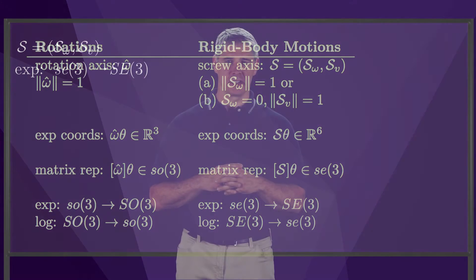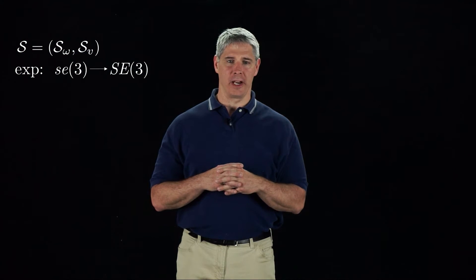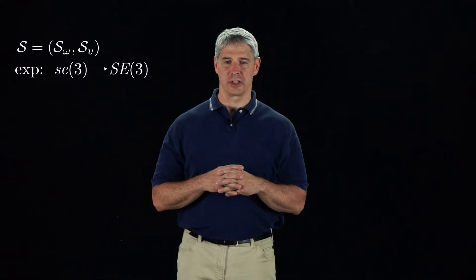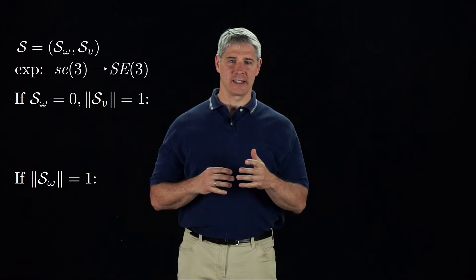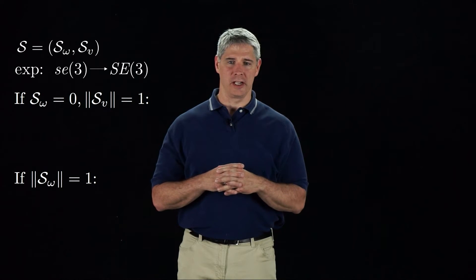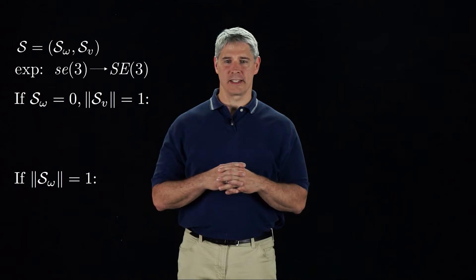As with the case for rotations, the matrix exponential for rigid body motions has closed-form solutions. There are two cases to consider, one where the screw axis is a pure translation with no rotation, and one where the screw axis has rotation.